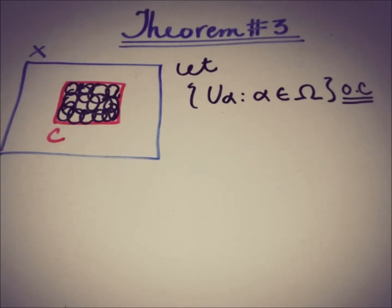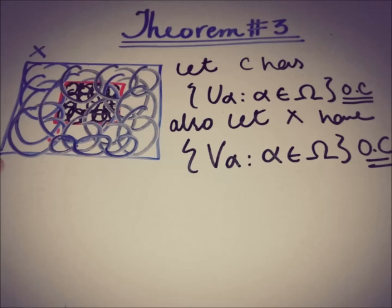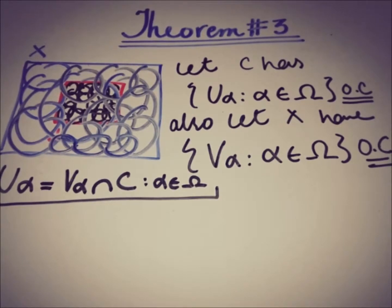We know that X is a compact space, so there must be a cover of X as well. This will be represented by V_alpha, which is an open cover of X. What is the relation of V_alpha and U_alpha? We can say that for each open cover of X, V_alpha, if we take the intersection of V_alpha with C, then we call it U_alpha. We can write it as: U_alpha is equal to V_alpha intersection with that closed subset C.